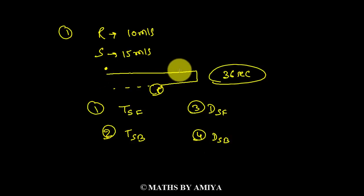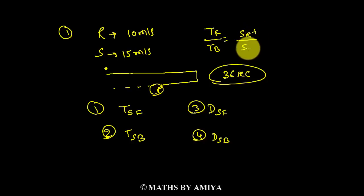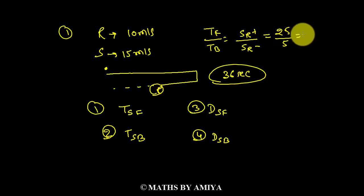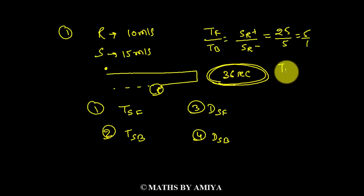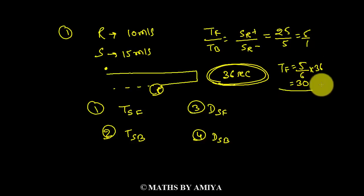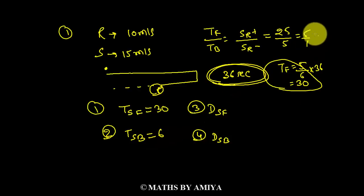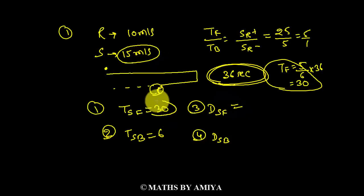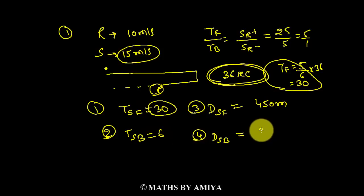Since Sam is moving to and fro, our concept says time forward upon time backward equals speed relative plus upon speed relative minus. Speed relative plus is 15 plus 10 equals 25, and speed relative minus is 15 minus 10 equals 5. The ratio is 5 to 1. Total time is 36 seconds, so time forward equals 5 out of 6 parts of 36 equals 30 seconds, and time backward equals 6 seconds. Distance forward equals 15 times 30 equals 450 meters. Distance backward equals 15 times 6 equals 90 meters.